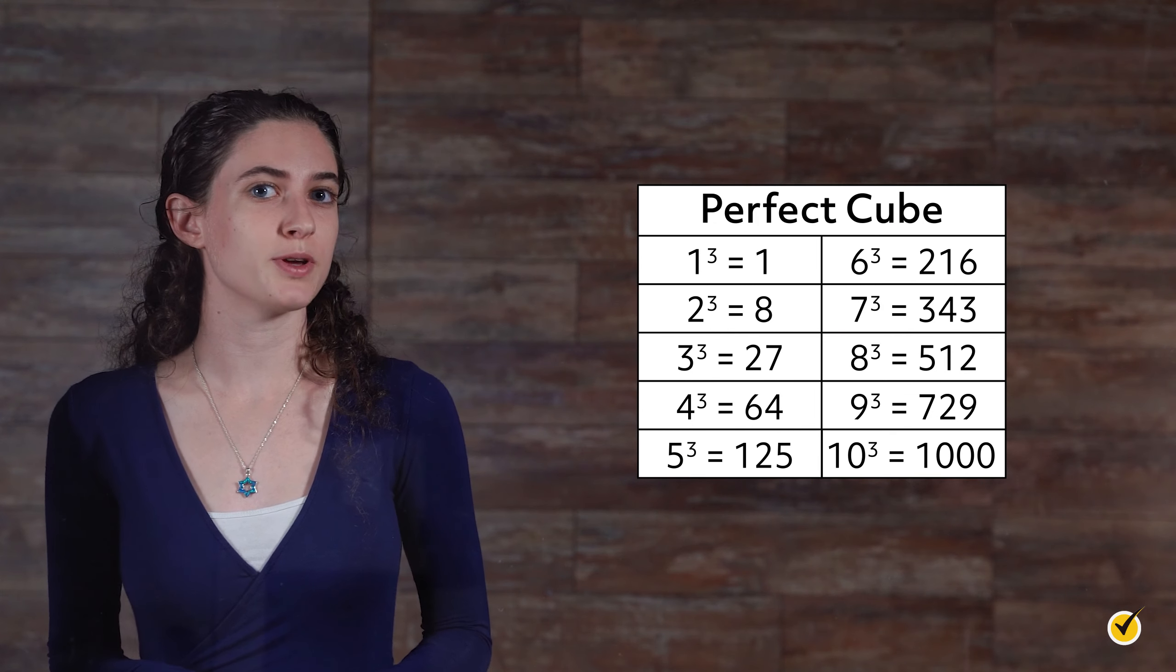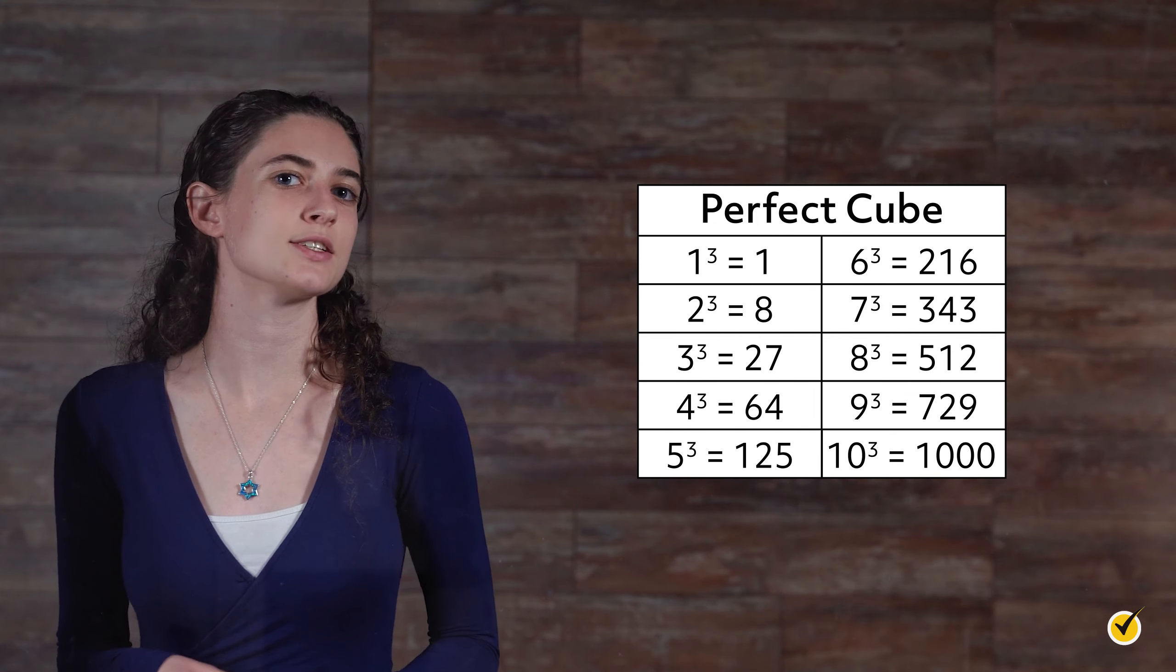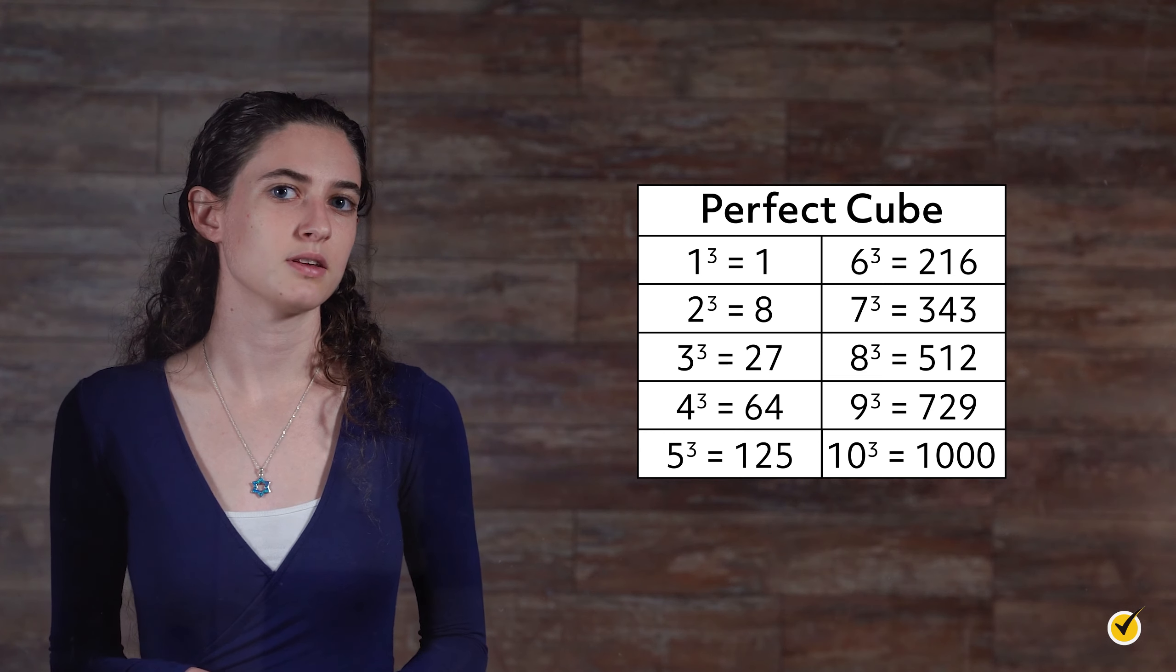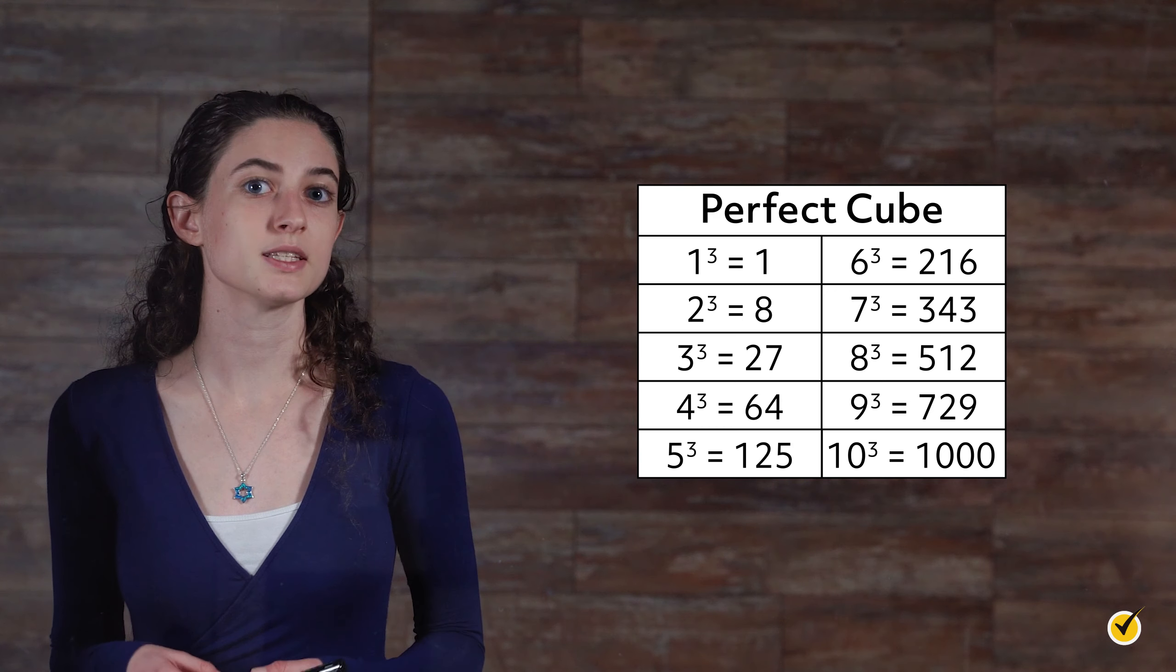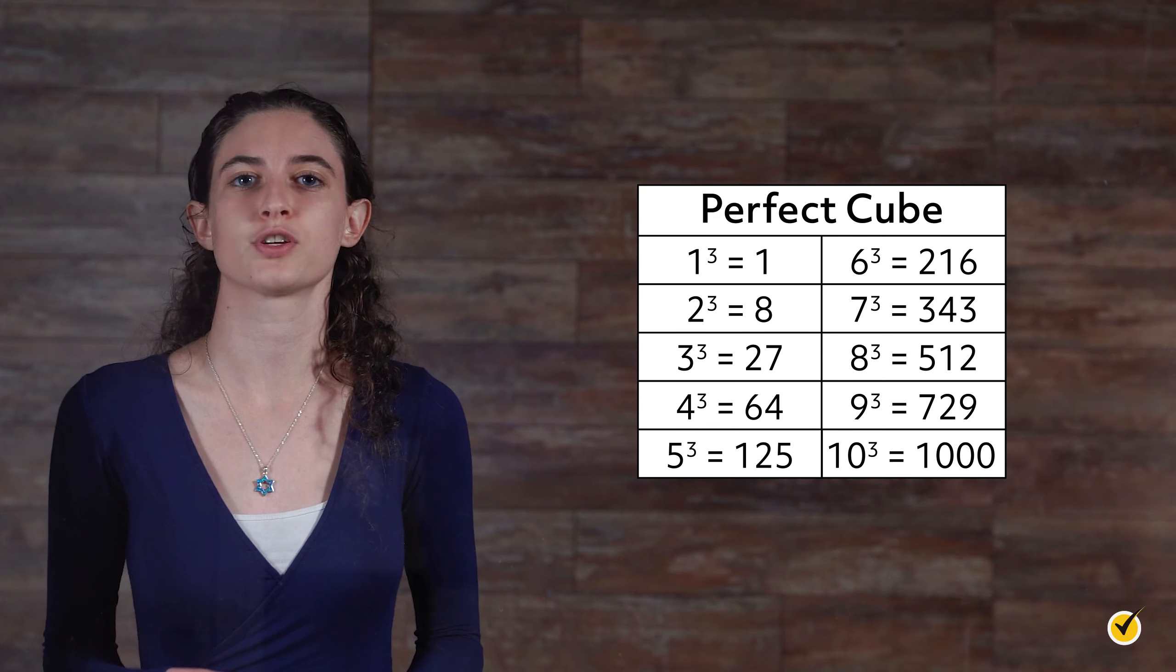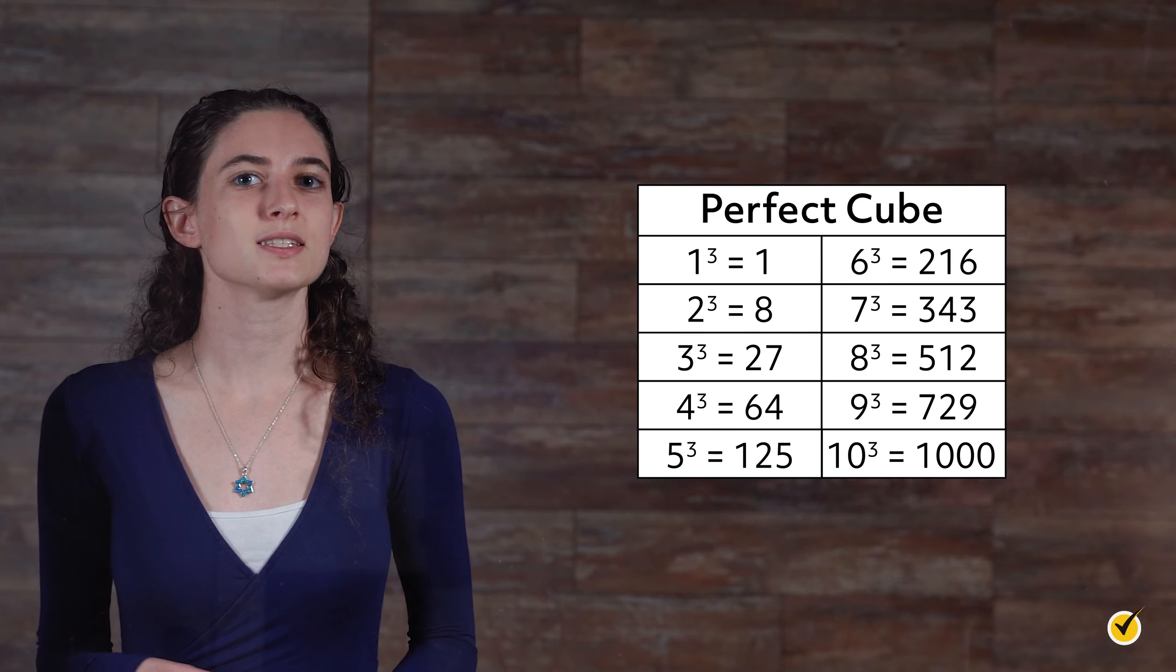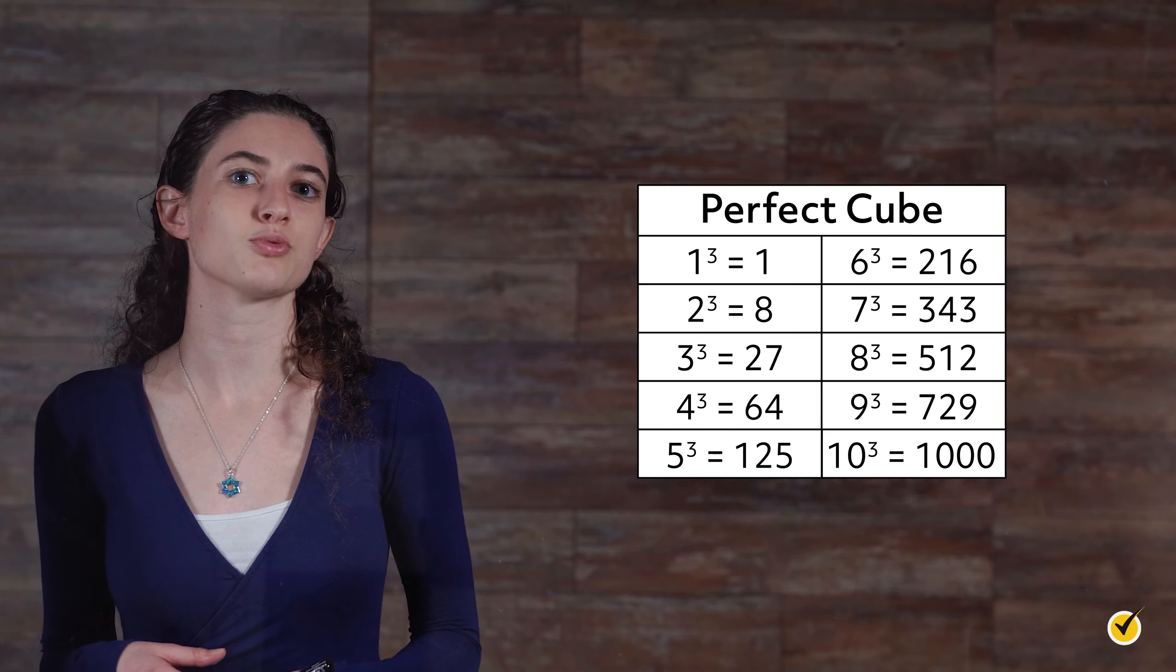Perfect cubes can also be quickly determined by multiplying any integer by itself 3 times. In one of the previous examples, we showed that 4 is the cube root of 64. This means that 64 is a perfect cube. As revealed in this table, perfect cubes increase rapidly.